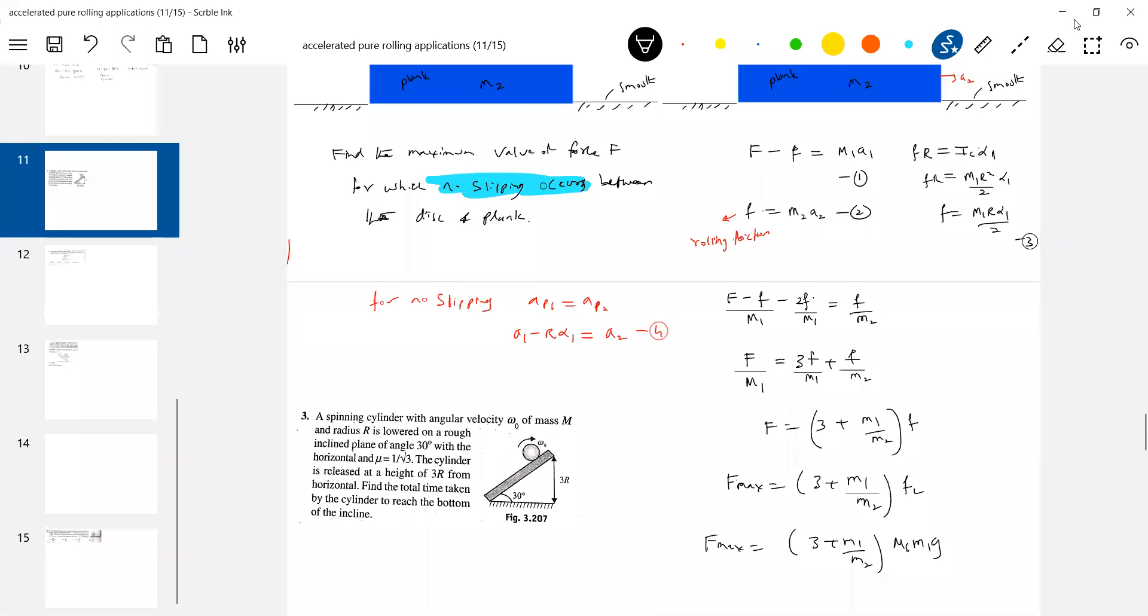So there's the value. So if you apply force greater than this, slipping will occur. If you apply force less than this value, no slipping occurs. So the same ideas of block open a block is what we have just introduced here also.